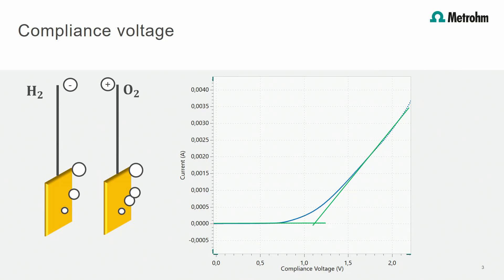So what is compliance voltage? To start a reaction in a potentiostatic electrolysis experiment it is necessary to apply voltage between two electrodes with a potentiostat. When considering the classical water splitting experiment we can see from the IV curve that at lower voltages no reaction occurs. If the voltage is increased continuously, the Faraday current evolves at a certain potential. This voltage is called the decomposition voltage.